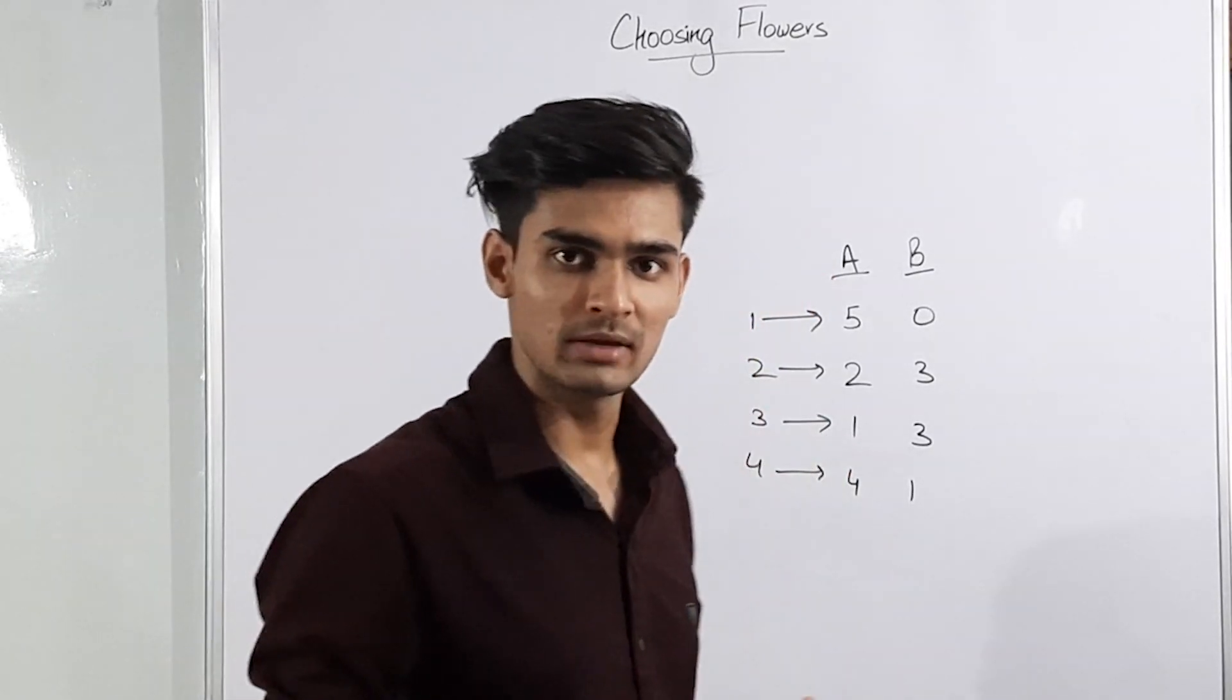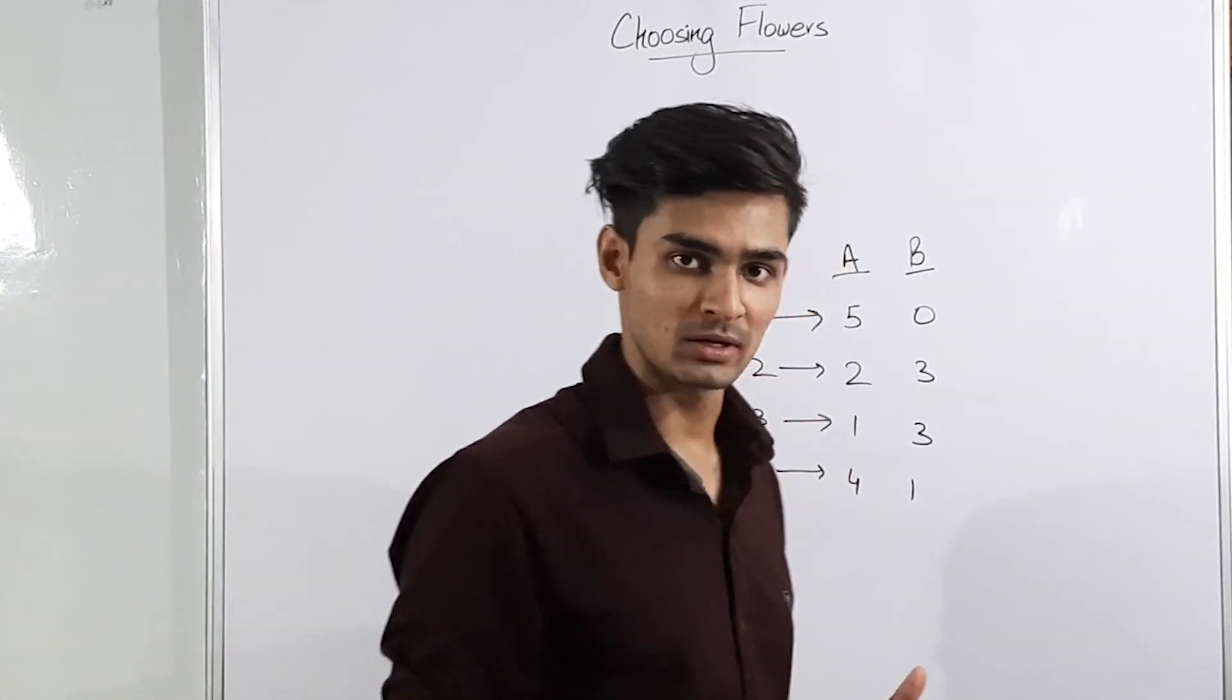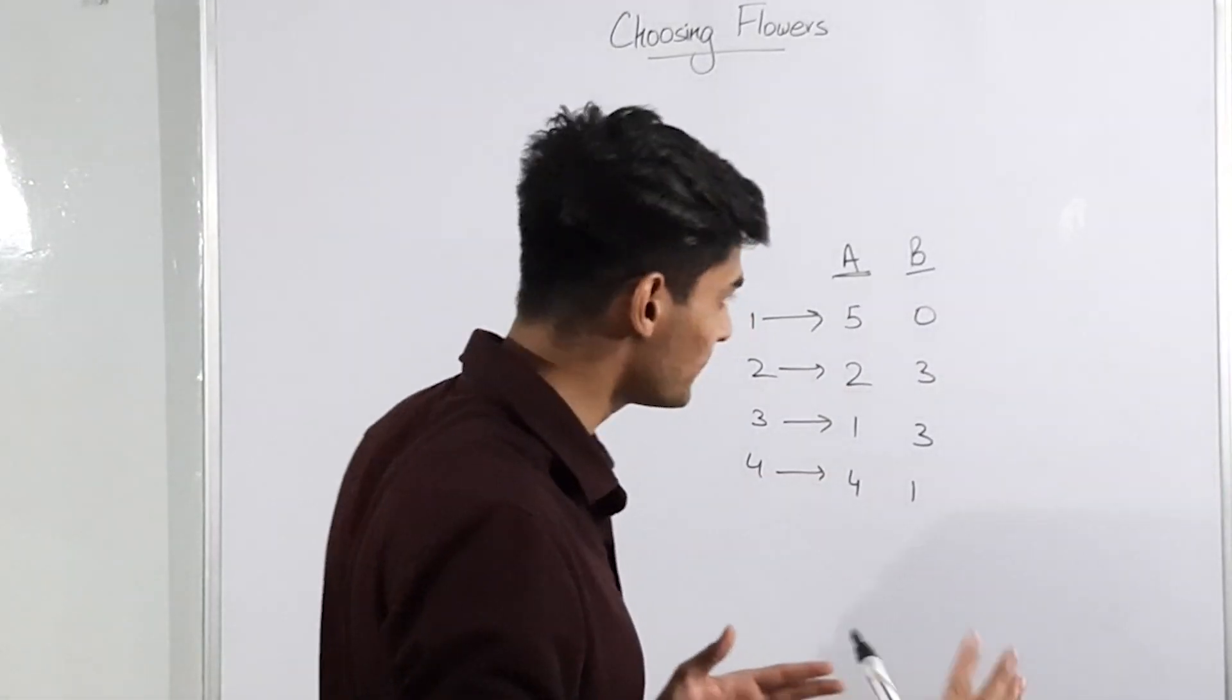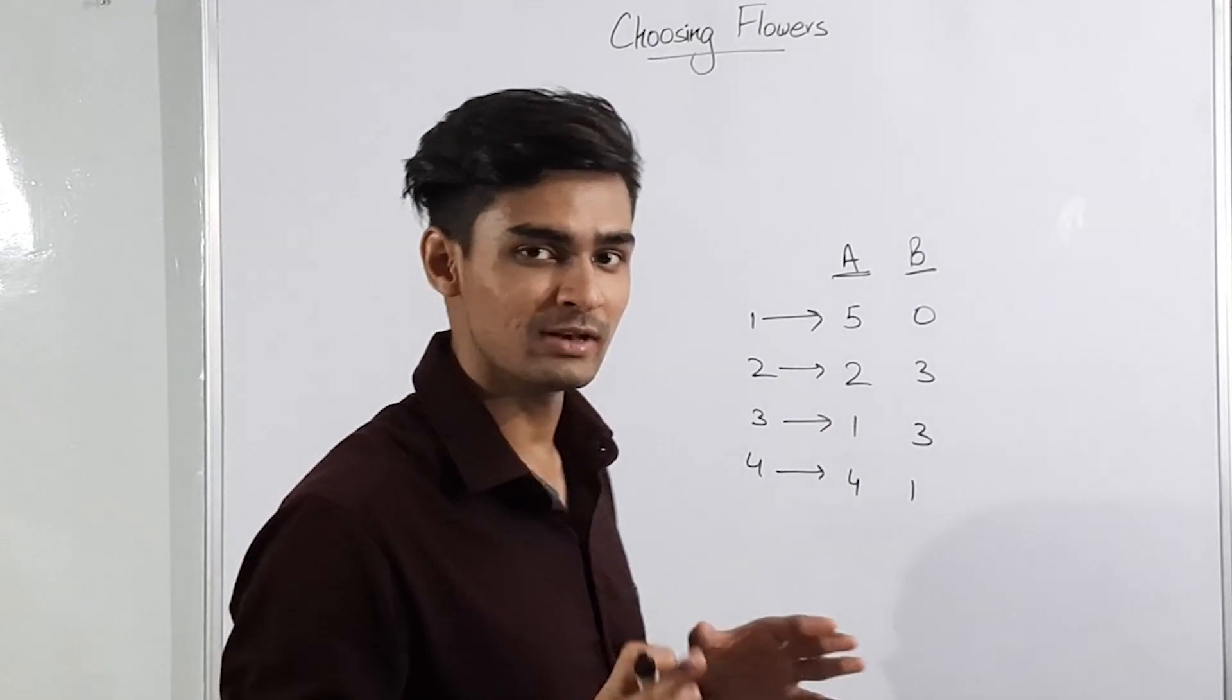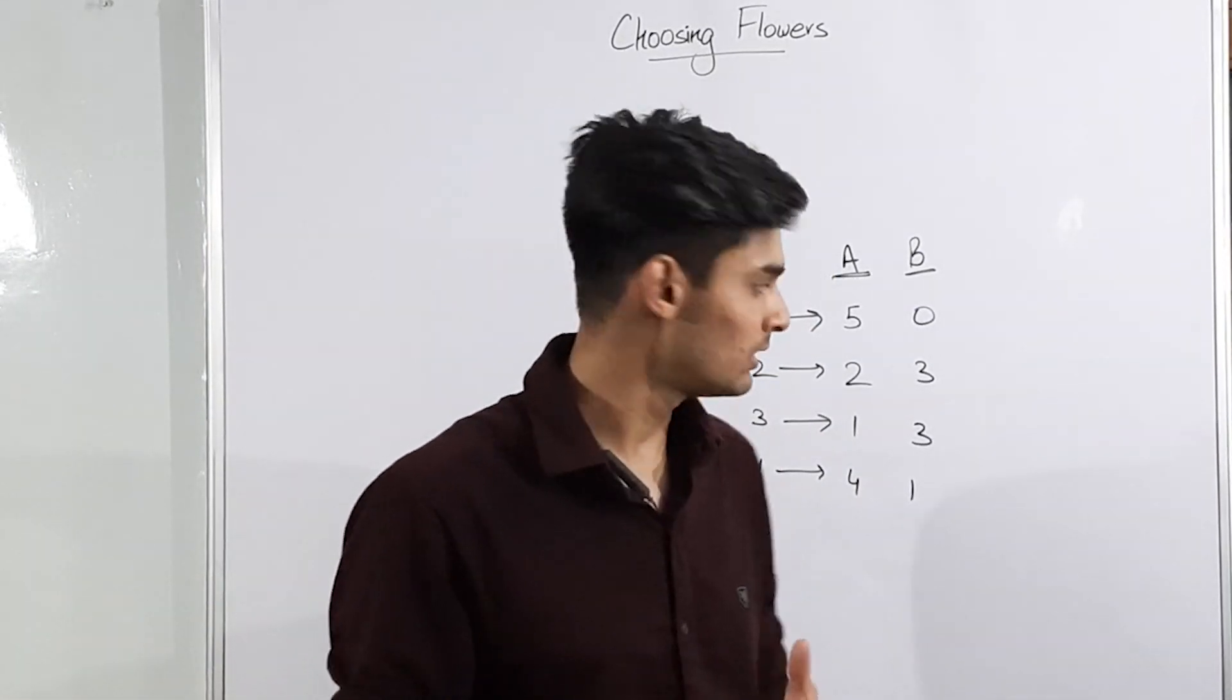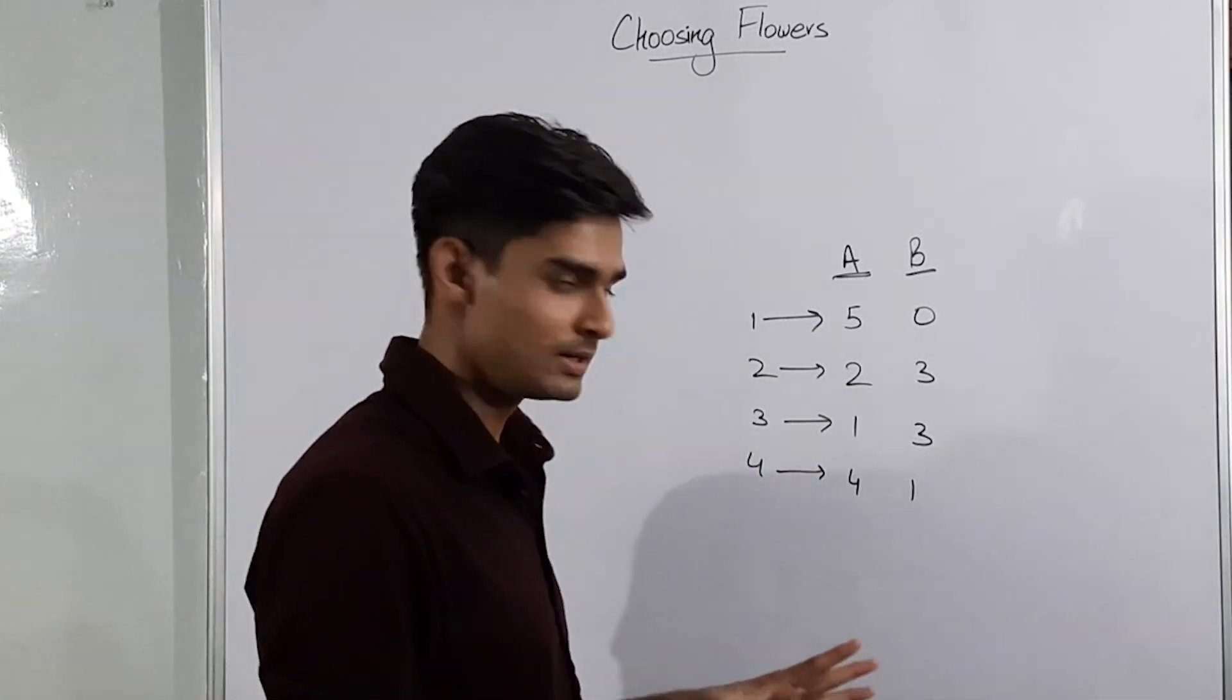The problem says that you are given N different types of flowers and for every first flower you buy of one particular type you get AI happiness and for every subsequent flower you buy of that particular type you get BI happiness. Now you are given infinite supply of these flowers and you have to select M flowers in such a way that the summation of the happiness is maximized.